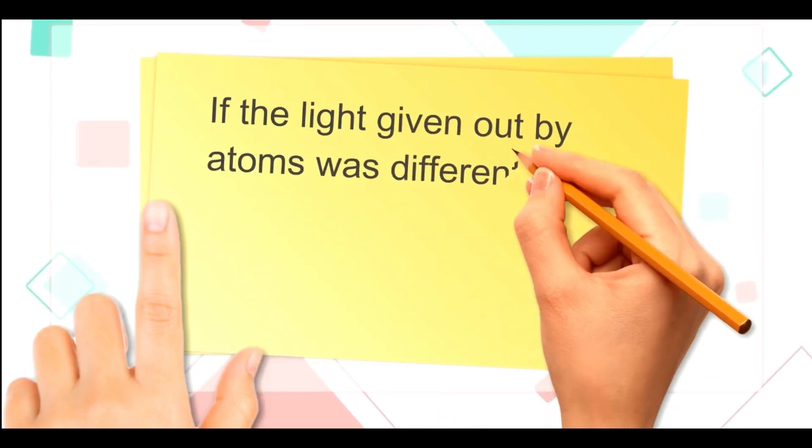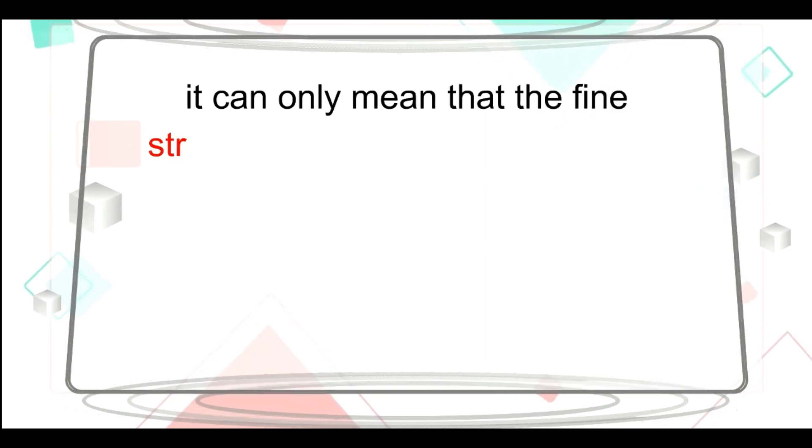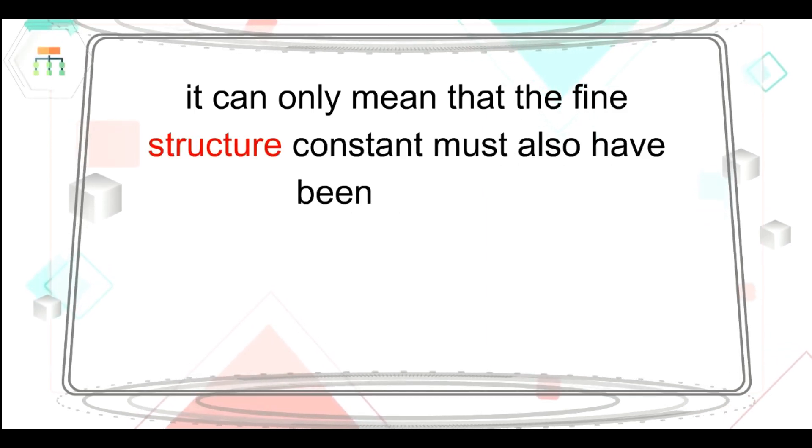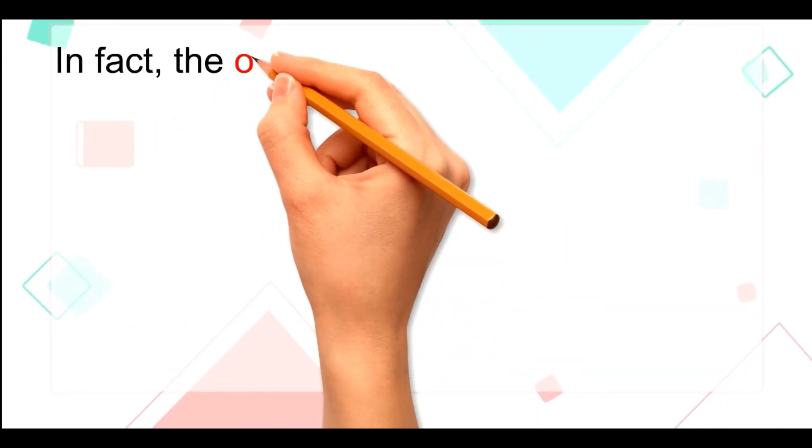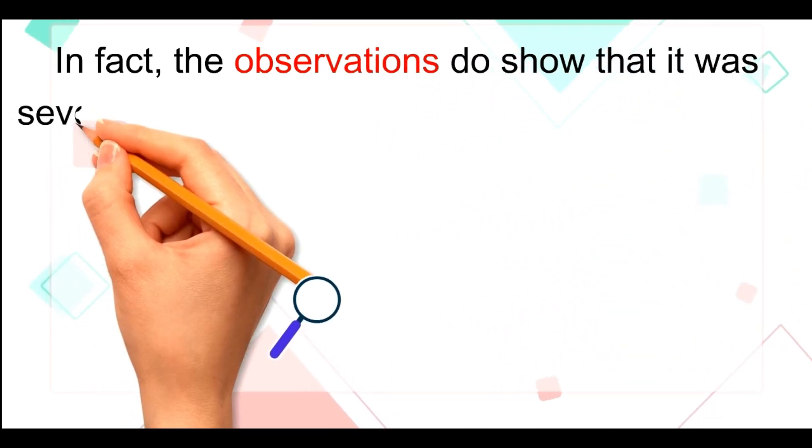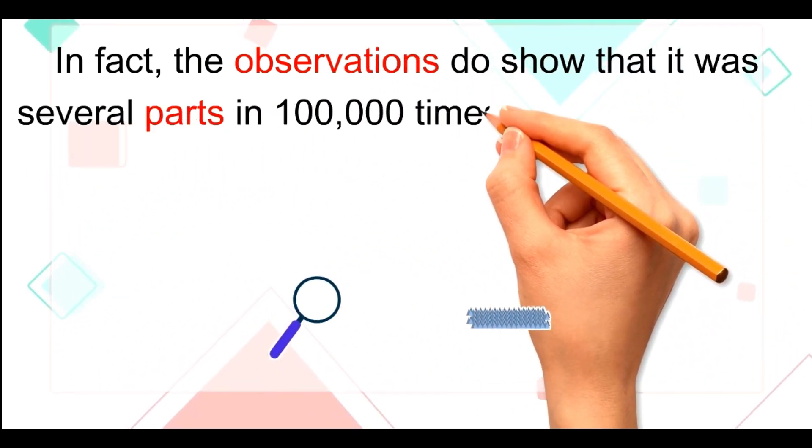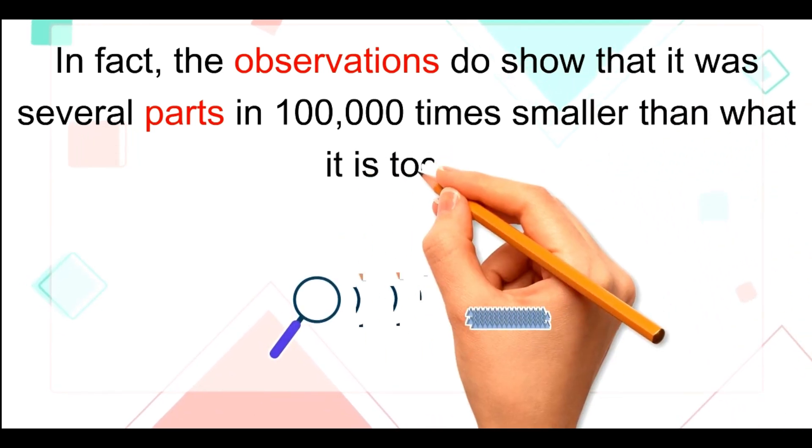If the light given out by atoms was different 10 billion years ago, it can only mean that the fine structure constant must also have been different. In fact, the observations do show that it was several parts in 100,000 times smaller than what it is today.